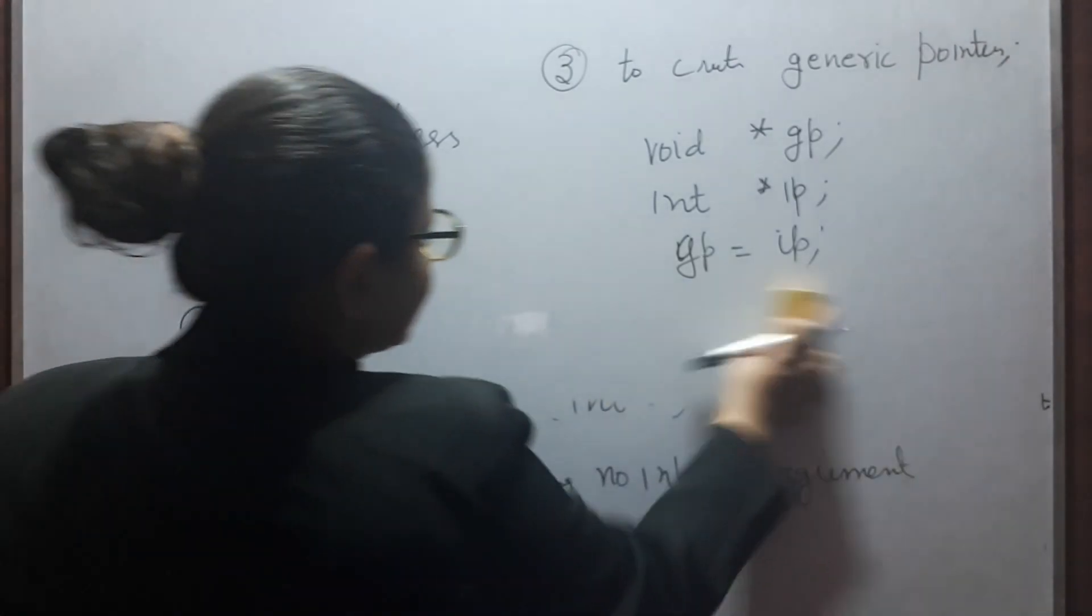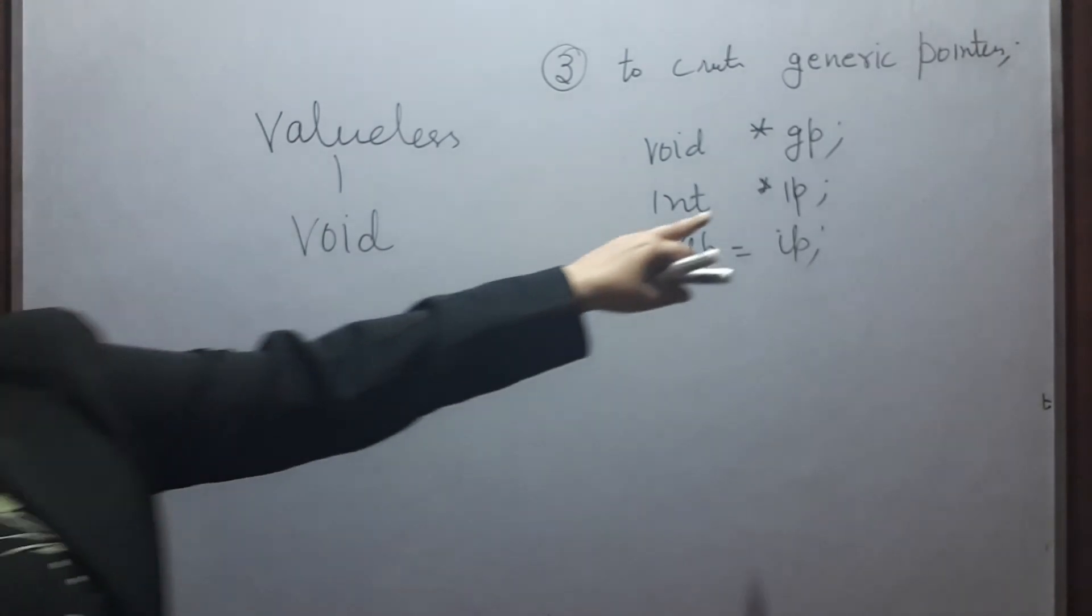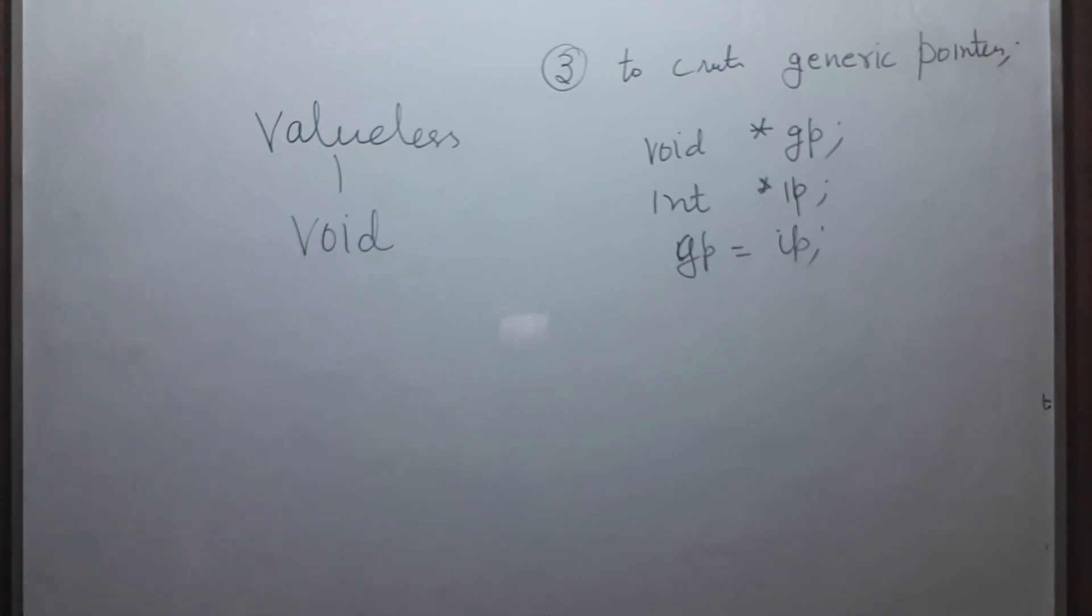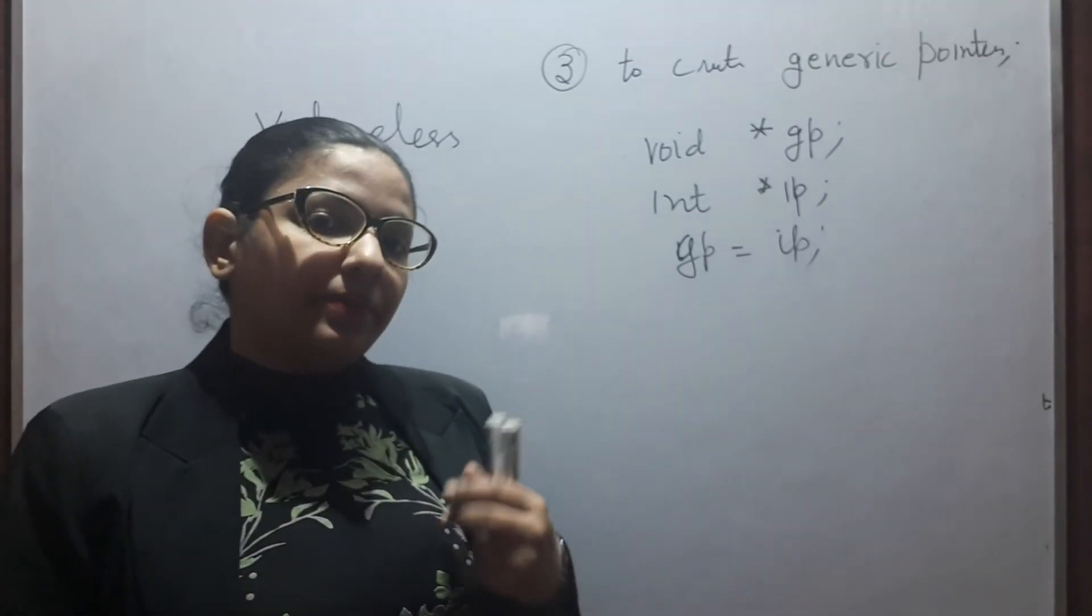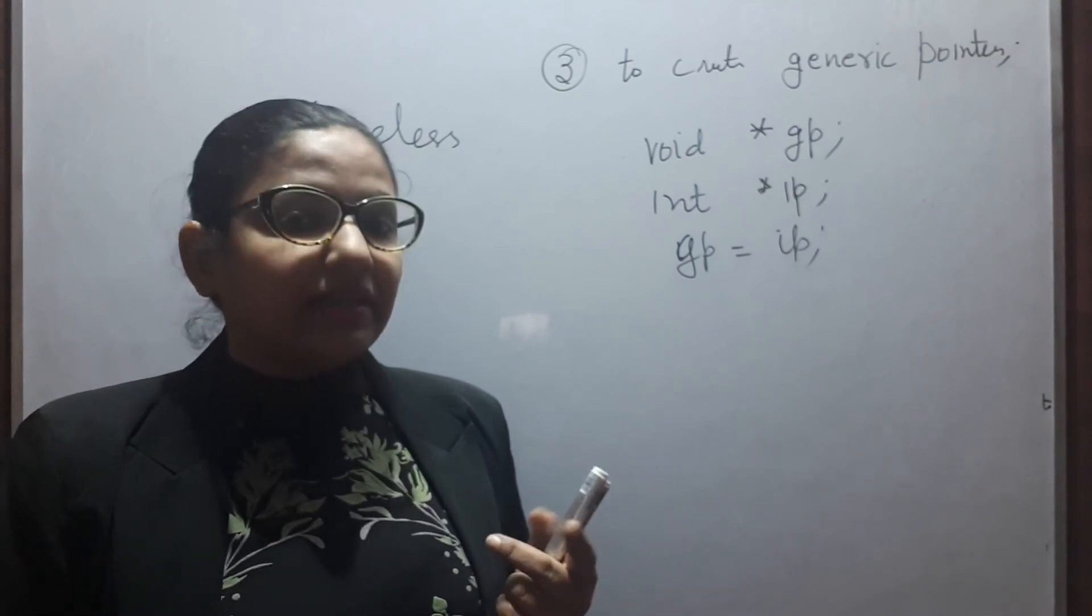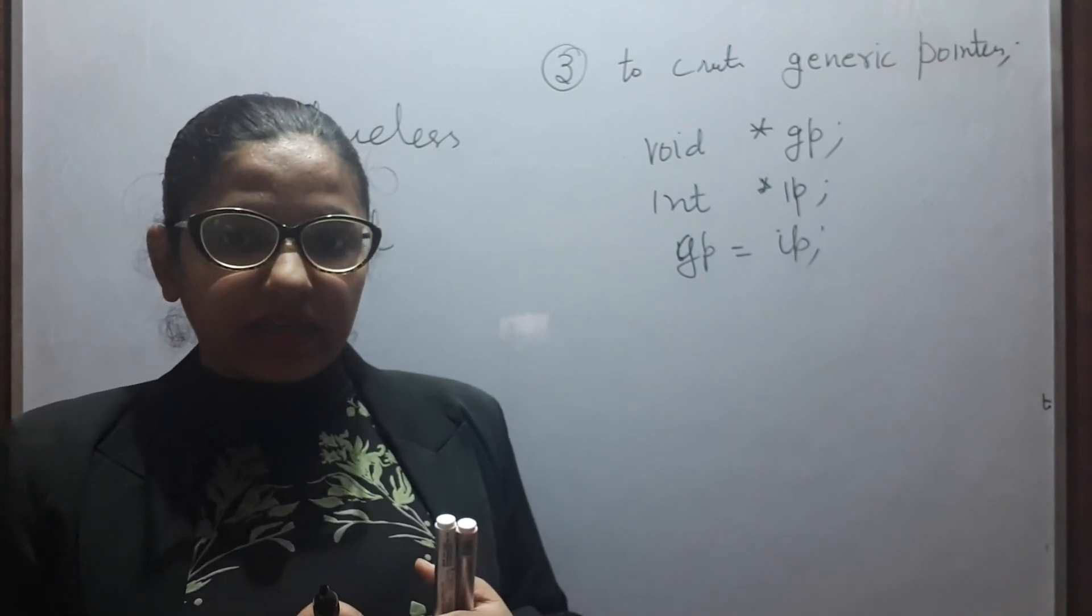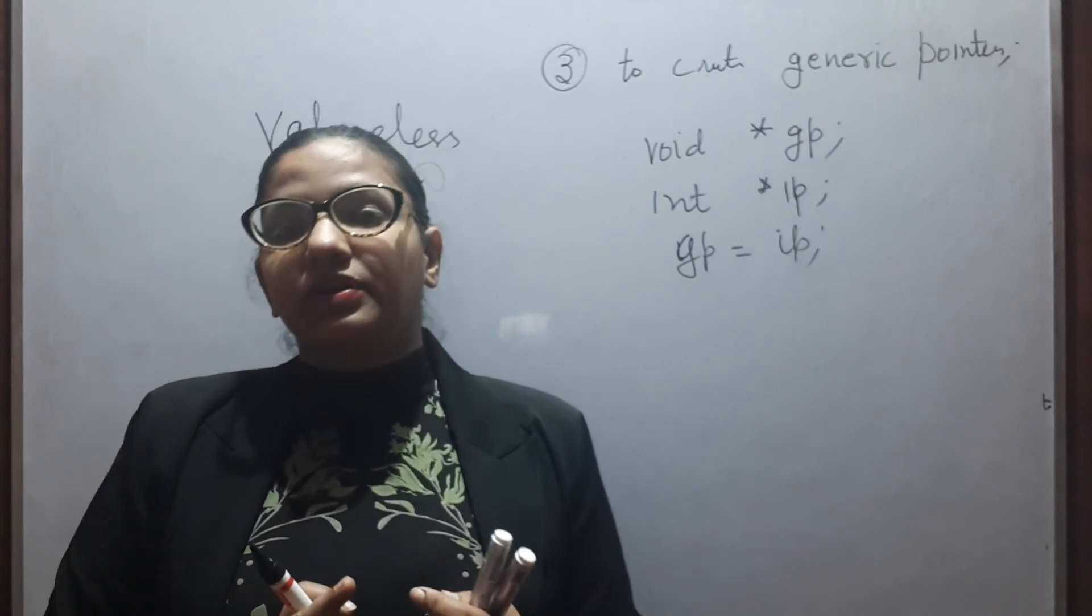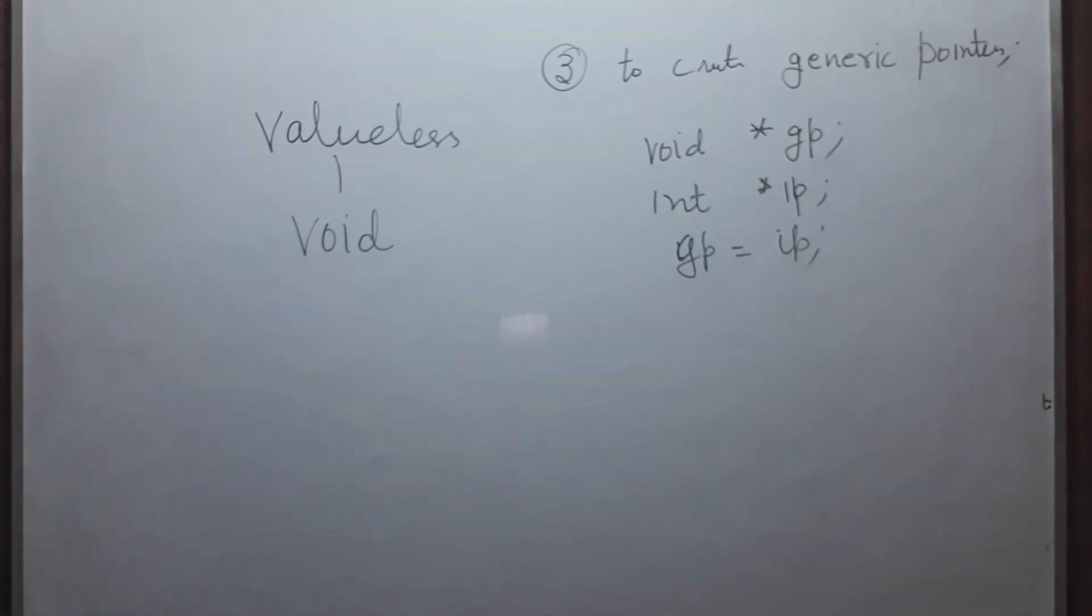So in this video, we have understand the idea of basic data types. Three data types: integral, floating point, and valueless. Integral is further of two types, that is integer and char. Floating point type is of float and double. Valueless is of void. Thank you.